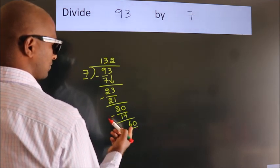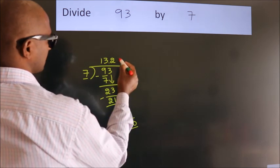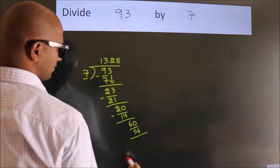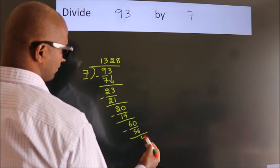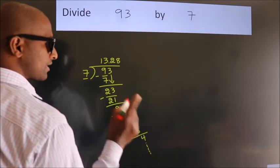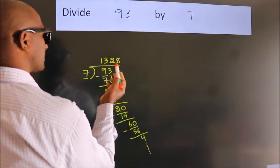A number close to 60 in 7 table is 7 8s 56. Now, we subtract. We get 4. And the division continues. It is enough if we do up to 2 decimal places.